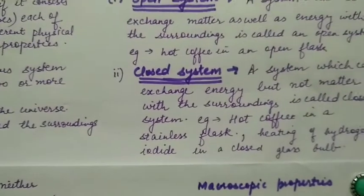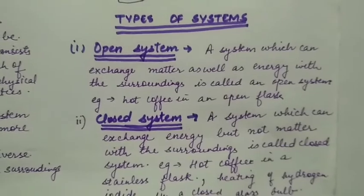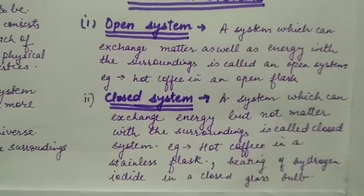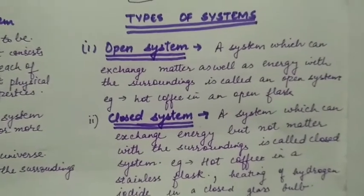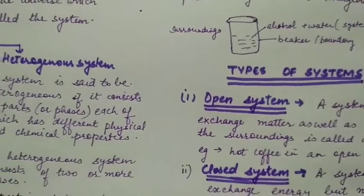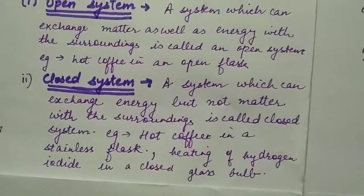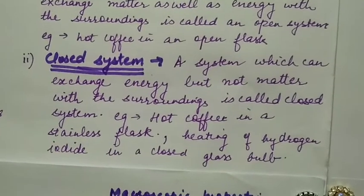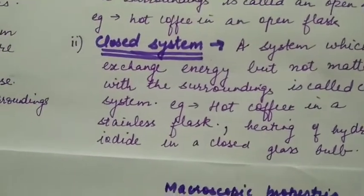A system which exchanges matter as well as energy with the surroundings is called an open system. For example, hot coffee in an open flask. Closed system which can exchange energy but not matter with the surroundings is called a closed system.